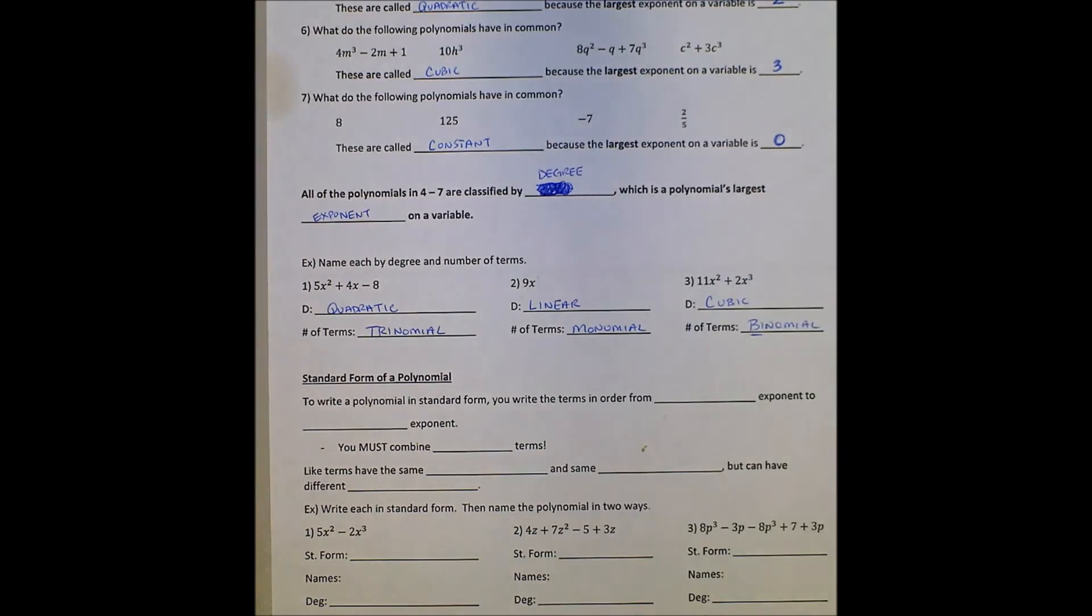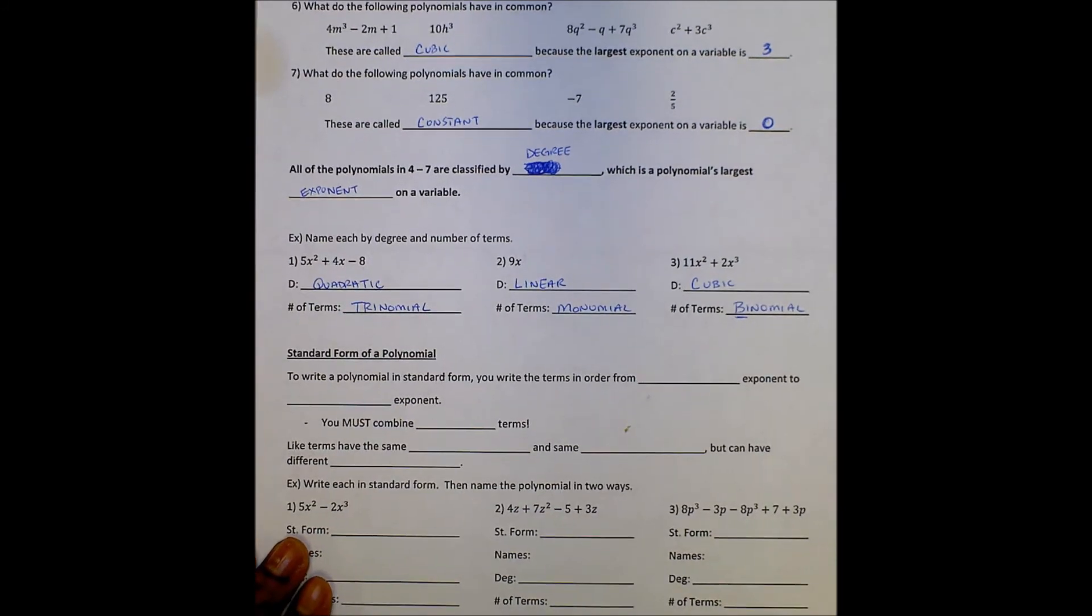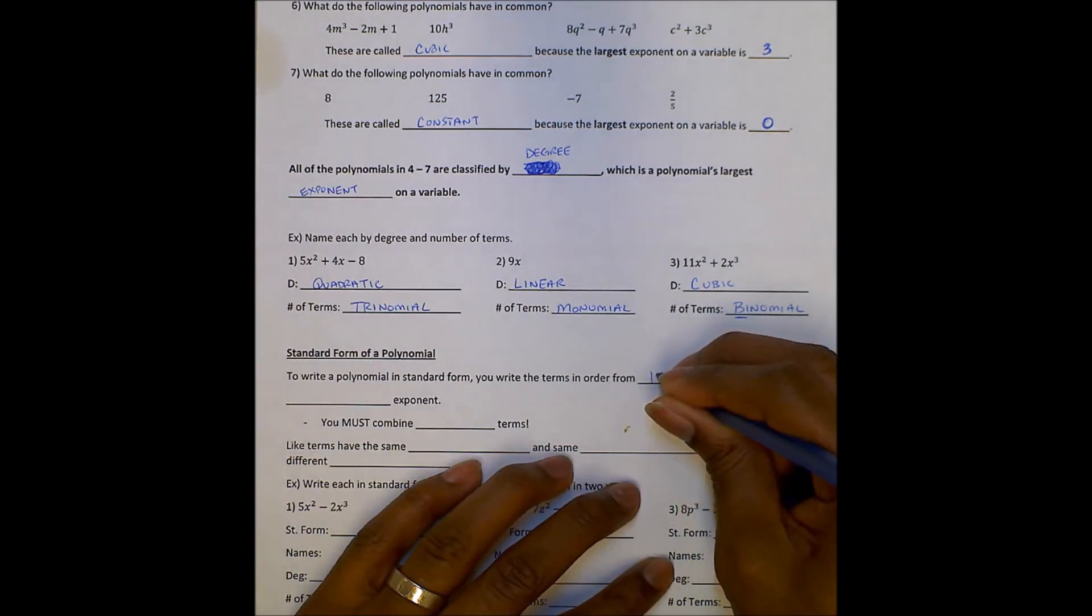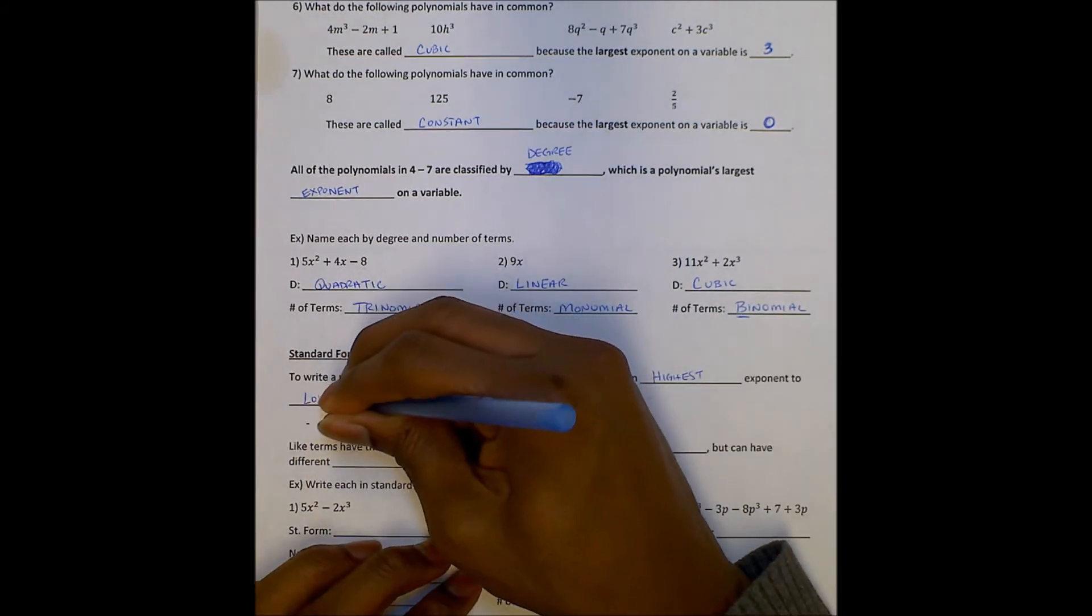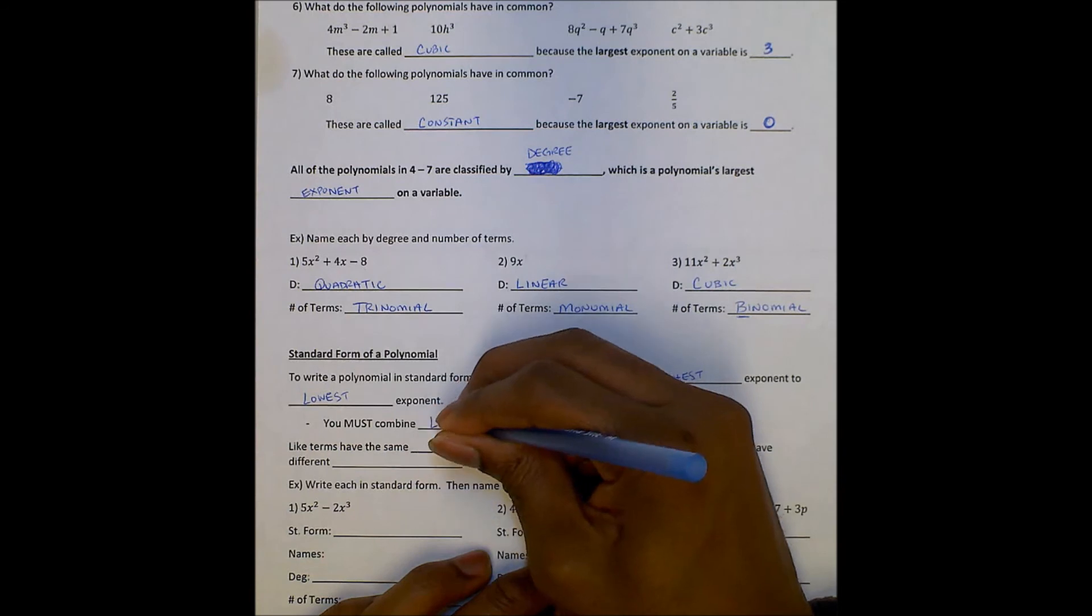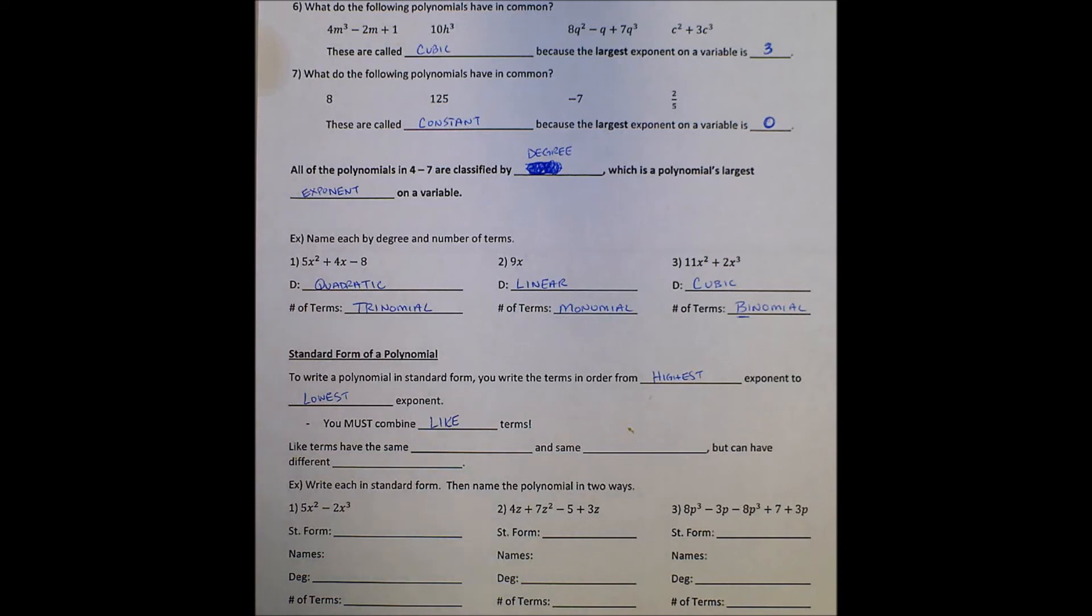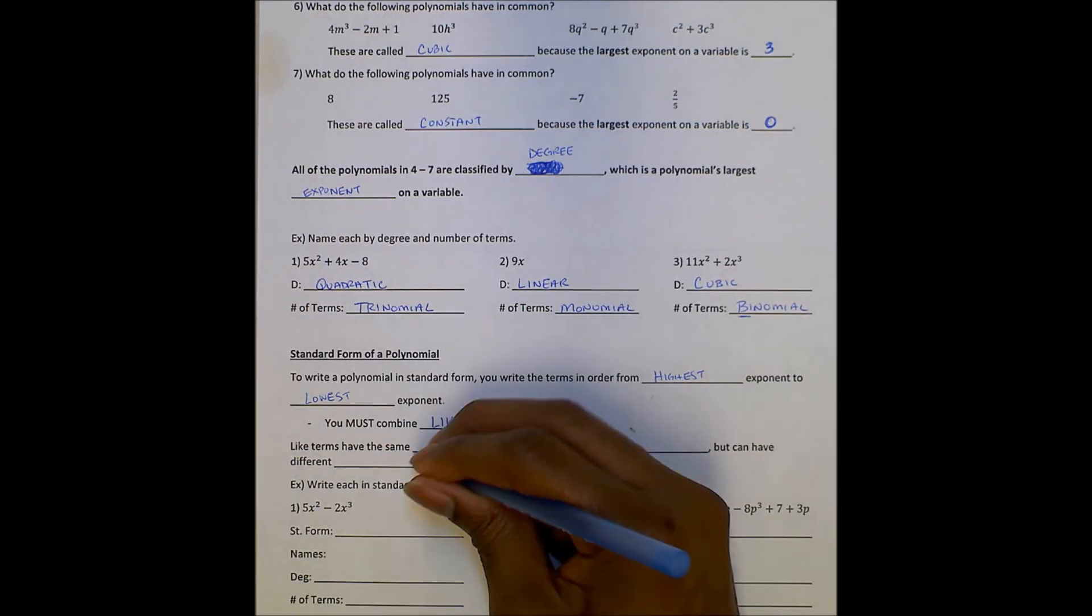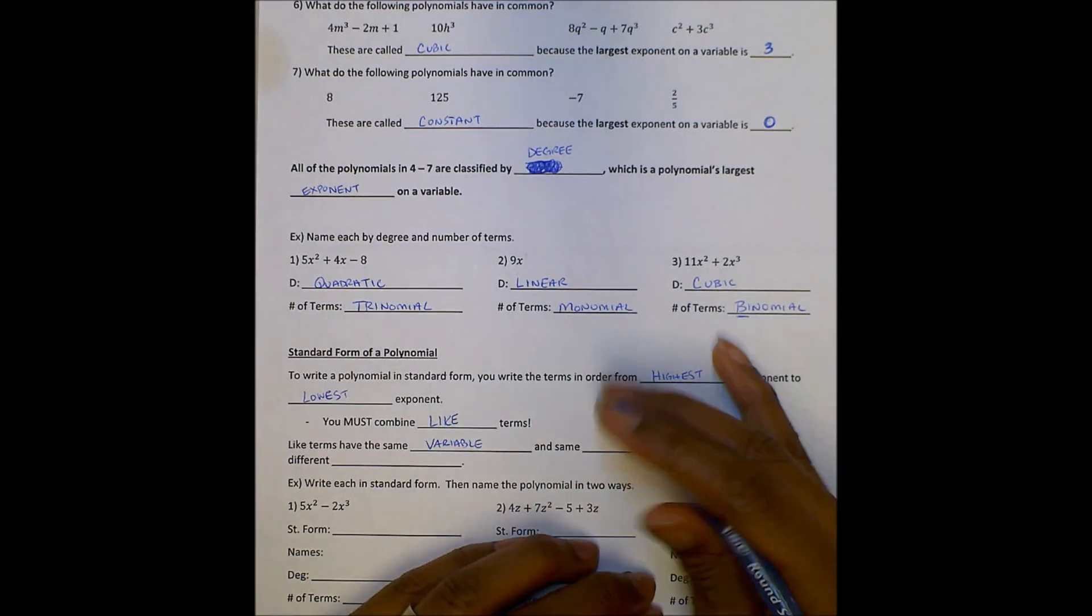Now let's finally talk about standard form of a polynomial. There is a right way and a wrong way to write a polynomial when you're done with it, and standard form is the right way. To write a polynomial in standard form, you write the terms in order from highest exponent to lowest exponent. That's standard form. You must combine like terms. Like terms have the same variable and same exponent.